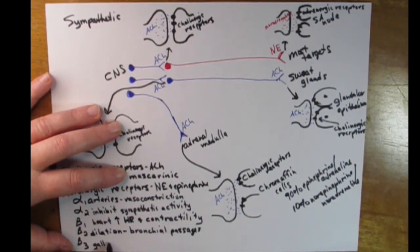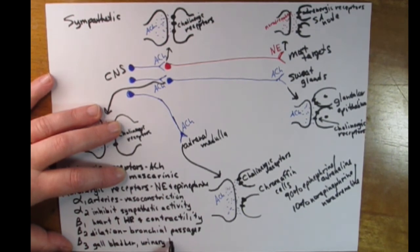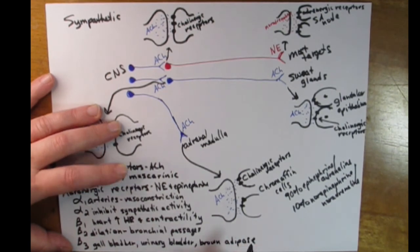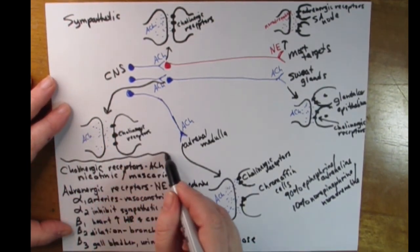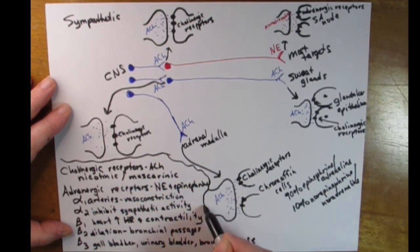Lastly, there is the beta-3 adrenergic receptor. These are found in the gallbladder and in the urinary bladder, where they help relax the cells in the walls of the urinary bladder so you are less likely to urinate. They are also found in brown adipose tissue, which is fat tissue found in babies, where they are mostly involved in lipolysis — the breakdown of fats — which helps with thermogenesis or thermal regulation.